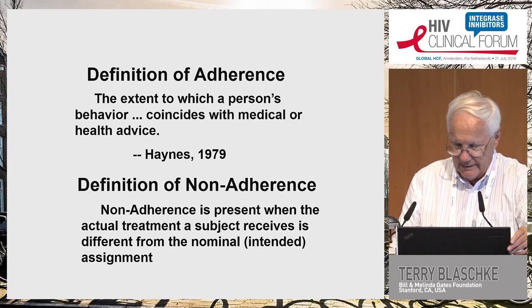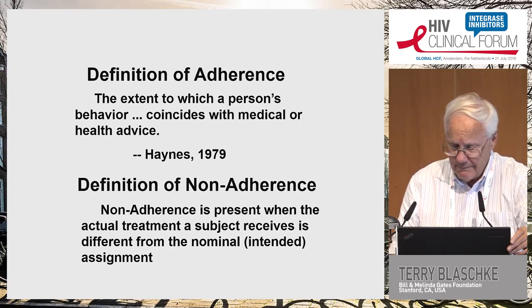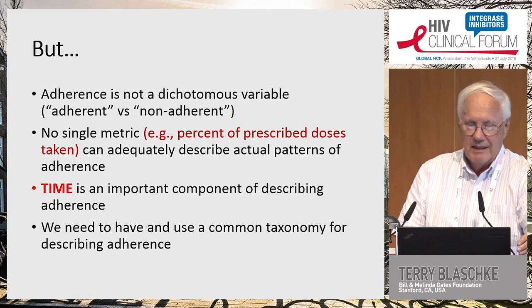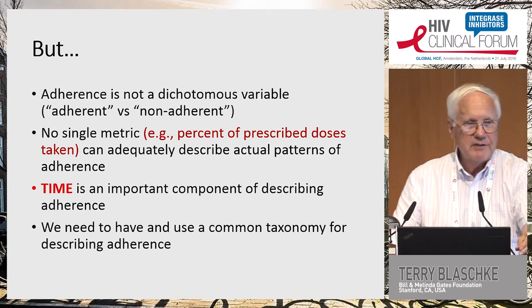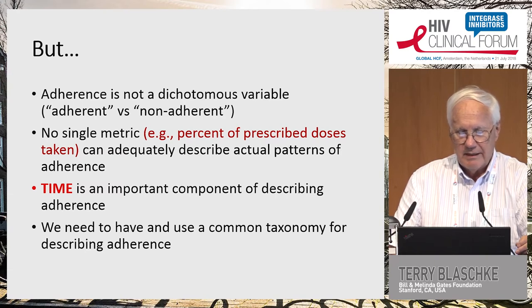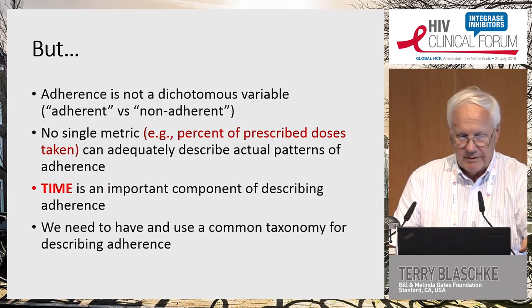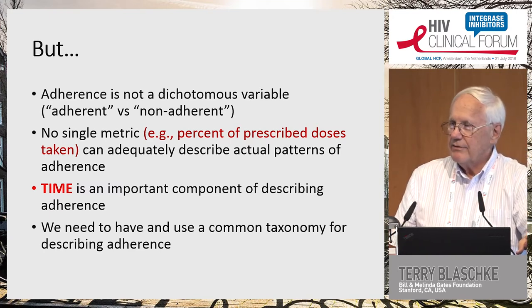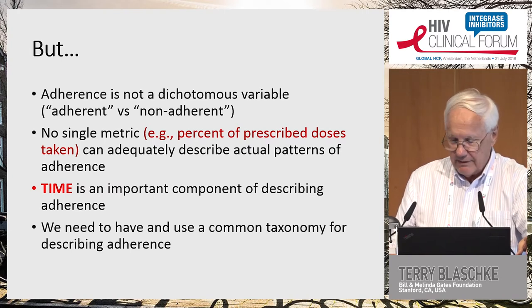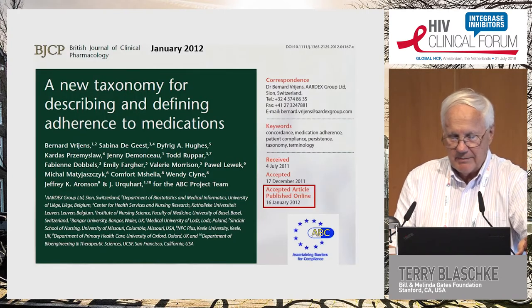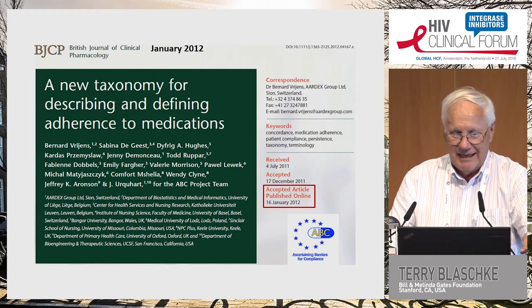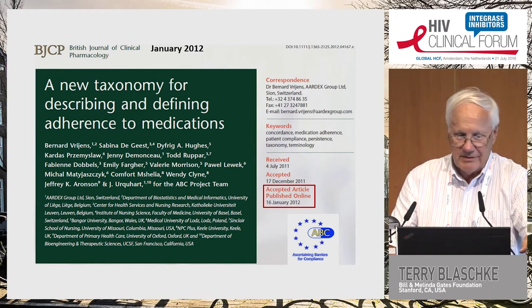Adherence is not a dichotomous variable, but you hear people talk about that all the time — adherent versus non-adherent. There's no single metric, either percent of prescribed doses or any other, that can adequately describe the actual patterns of adherence. Time is a very important component of describing adherence, and to do so we really have to use a different common taxonomy. This is called the ABC Project, published in 2011, and it's the terminology I'll use throughout this presentation.